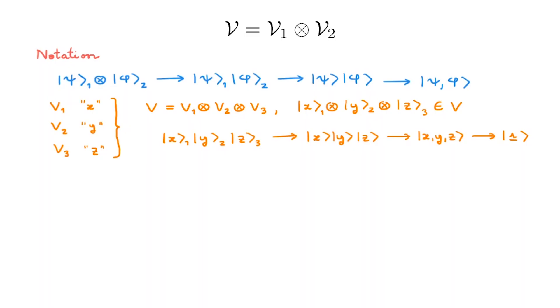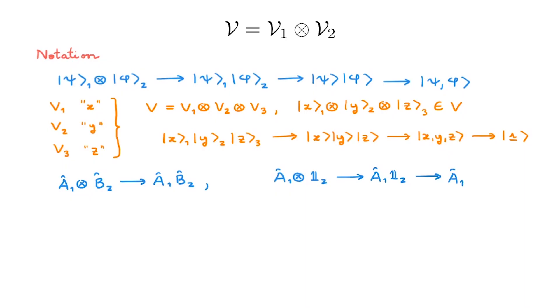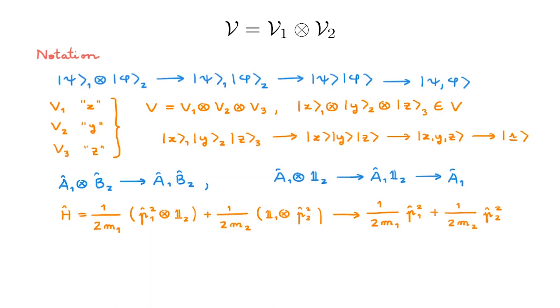For operators, we typically write the tensor product between A₁ and B₂ as simply A₁B₂. The tensor product between A₁ and the identity in V2 can be written as A₁ ⊗ I₂, and this is often further simplified to just A₁. In this last expression, we have lost all reference to the fact that A₁ really acts on the tensor product space V, but it should always be clear from context. As an example, consider two free particles moving in one dimension — their Hamiltonian is given by the sum of the individual kinetic energies, and you will most often see it written in the simplified form, but you need to remember what this really means.